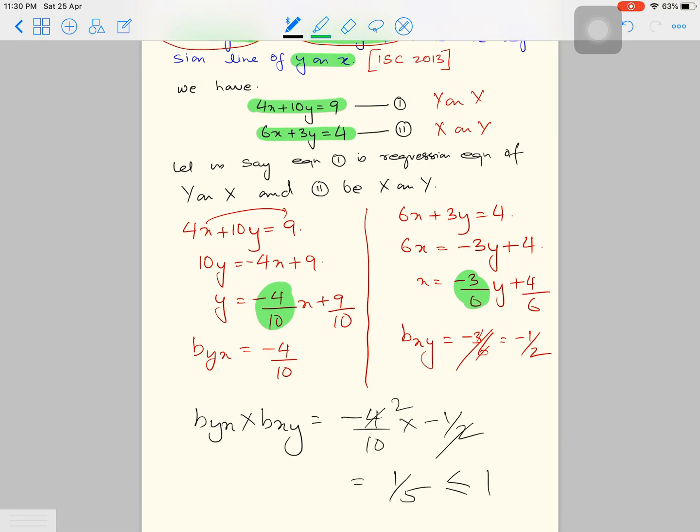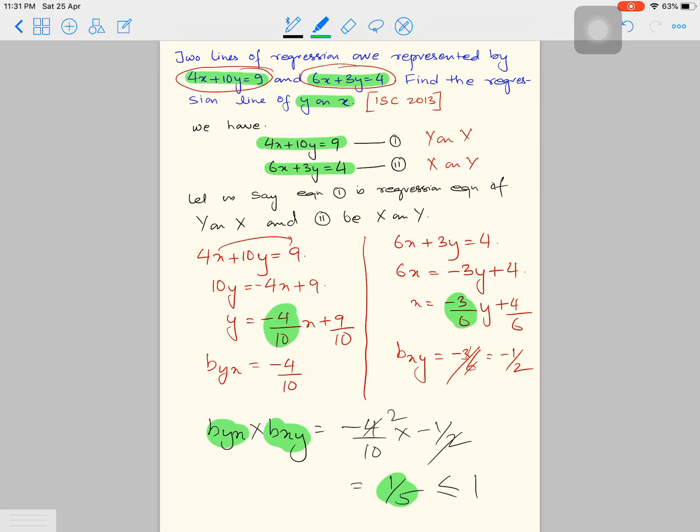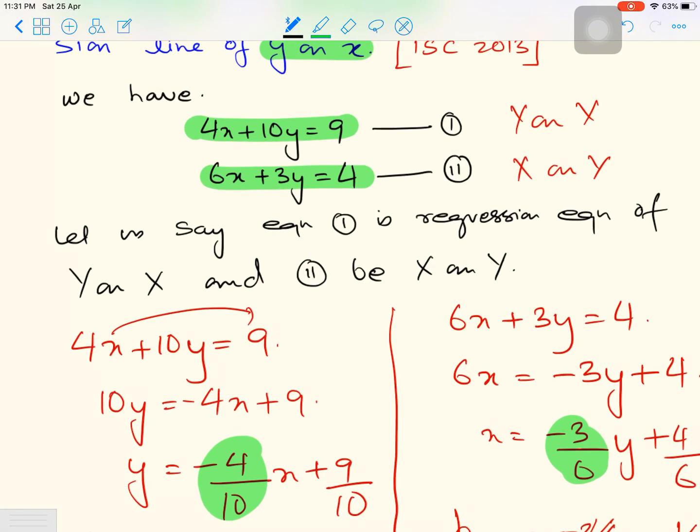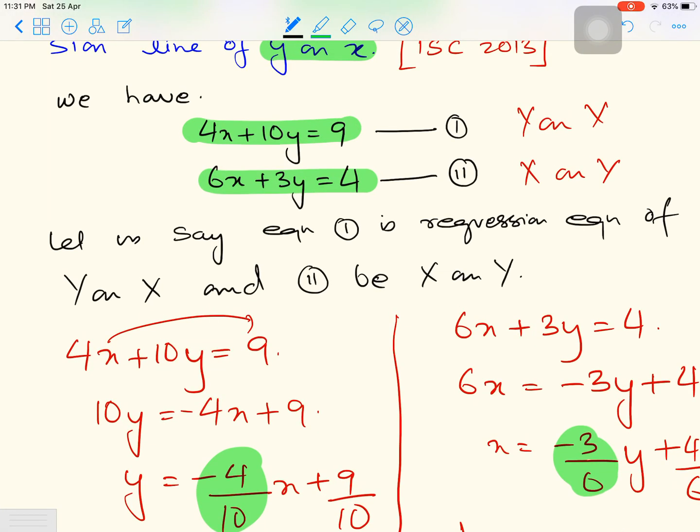Thus our assumption is true because the product between b_yx and b_xy equals 1 by 5, which means that whatever we had supposed in the beginning, our assumption was true.